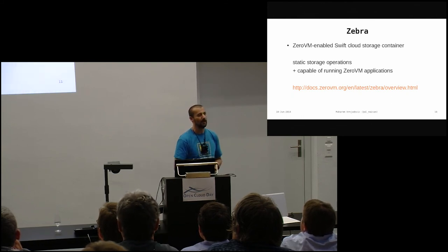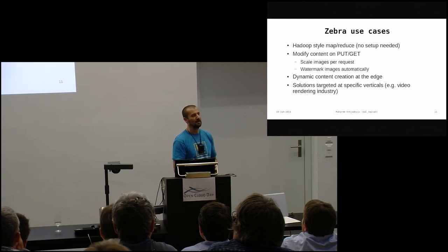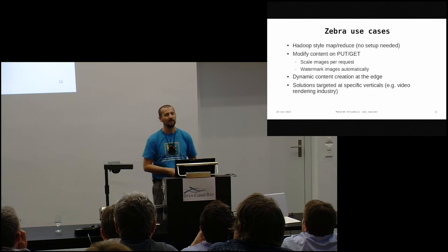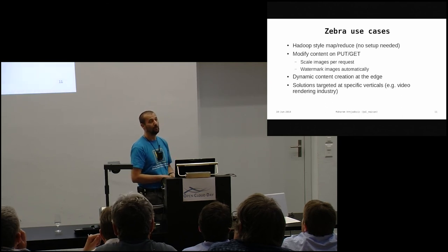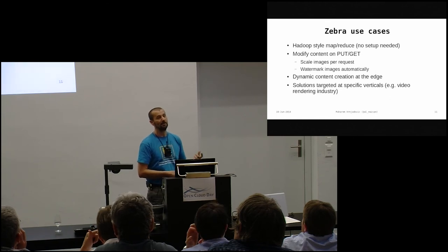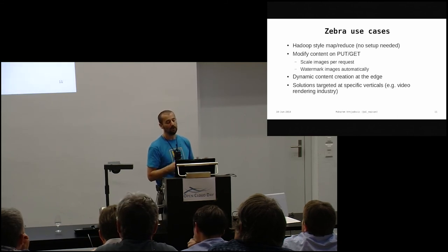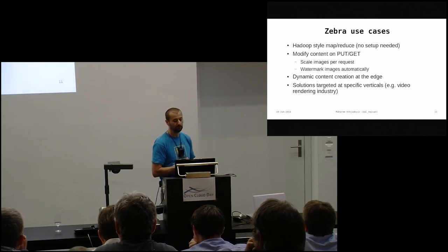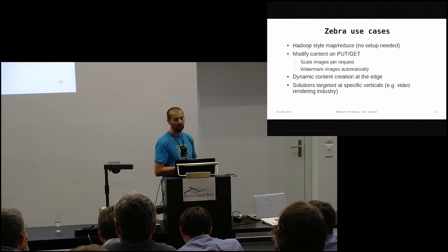Some use cases for Zebra or any 0VM-enabled cloud storage: first is MapReduce. If you want to use something like Hadoop for MapReduce, there's a big upfront effort preparing your Hadoop cluster — you need to set it up and get all the data in there. With 0VM, no such setup is needed. You already have your data in cloud storage. The only thing you need to prepare is your MapReduce application — a mapper and a reducer — plus a configuration file specifying how many nodes to use and how mappers pipe into reducers. It allows you to do spontaneous MapReduce work on your cloud data.